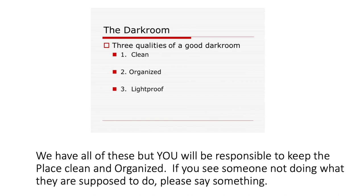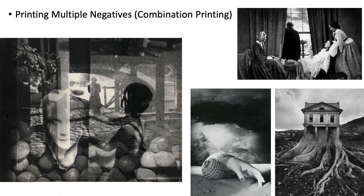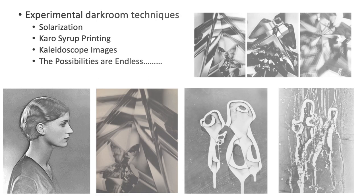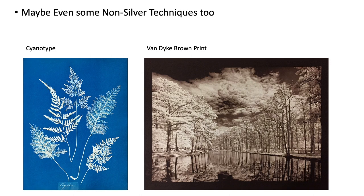We'll experiment with a number of different techniques such as multiple exposures, combination printing — such as printing multiple negatives — and other experimental darkroom techniques such as solarization, Karo syrup printing, kaleidoscopic images, and maybe even some non-silver techniques too, such as cyanotypes and Van Dyke brown prints.